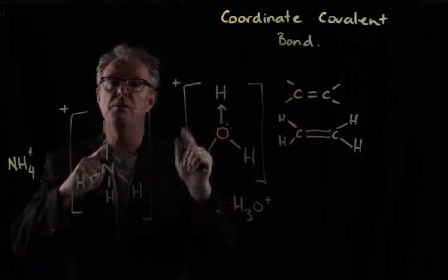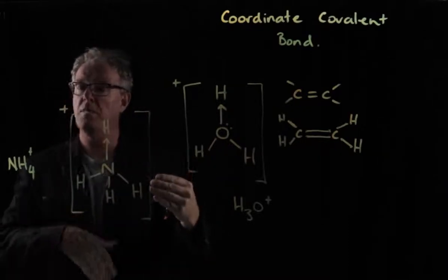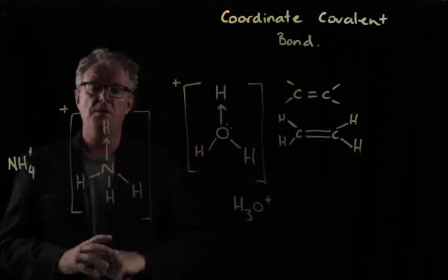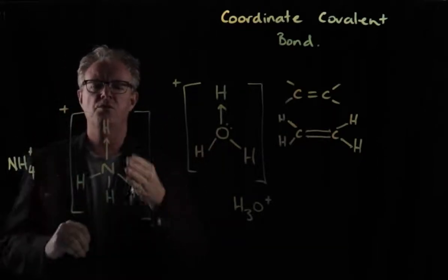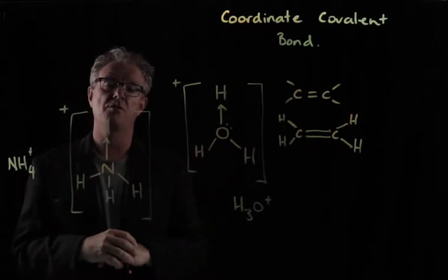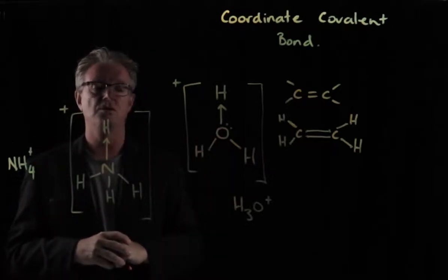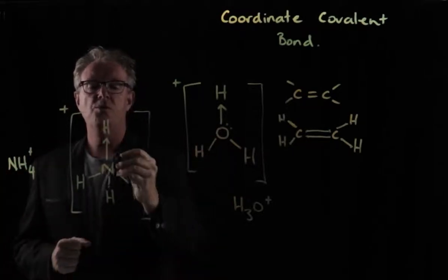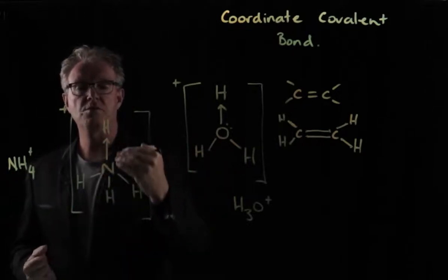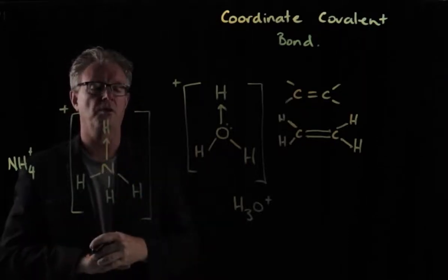Now, of course, we draw arrows here for us to keep an understanding of where electrons are coming from and when they're going to. But in reality, if you had a microscopic eye, there's no difference when you look down there between that bond, that bond, that bond, and that bond. They're all covalent bonds. However, from a chemical point of view, a chemist point of view, we like to show the formation with an arrow to indicate that the electrons came from the nitrogen and were bonded to the hydrogen. And so we have a coordinate covalent bond.